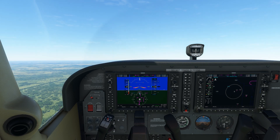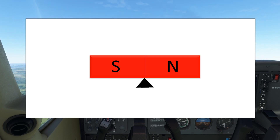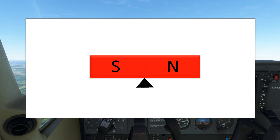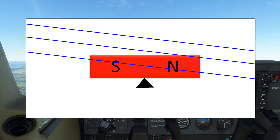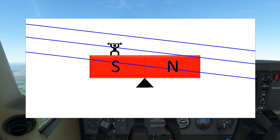The compass works by having a card attached to the magnet, which is suspended in fluid on a pivot in the instrument casing. To read the instrument easily, we would like it to sit horizontally. Due to the fact that the Earth's magnetic flux is not fully horizontal, we need to make the south side of the magnet heavier in the Northern Hemisphere.